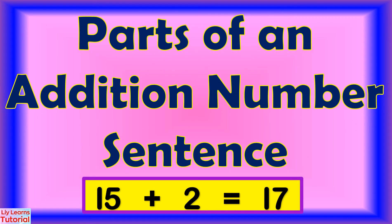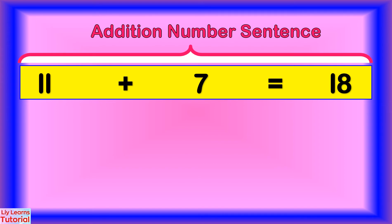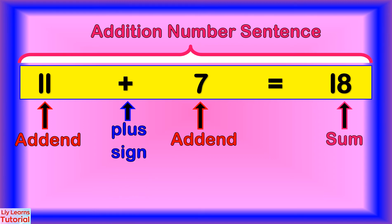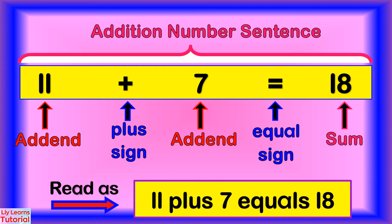Let's look at the parts of an addition number sentence. This is an addition number sentence. 11 and 7 are the add-ins. 18 is the sum. This is the plus sign, and this is the equal sign. We can read this as 11 plus 7 equals 18.